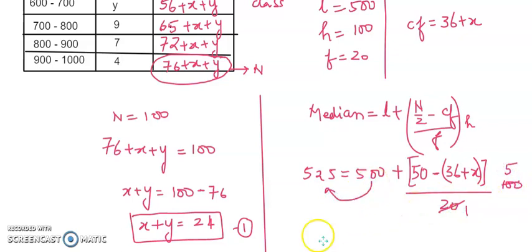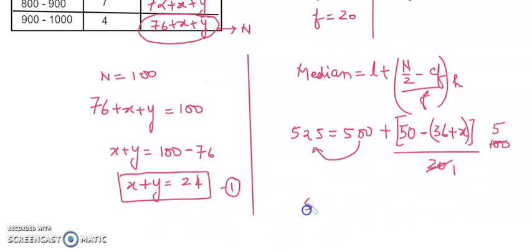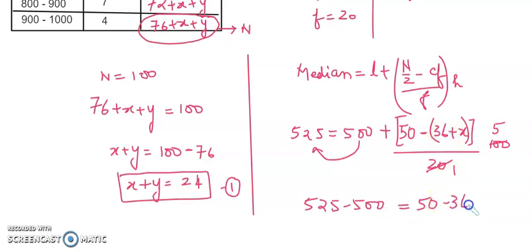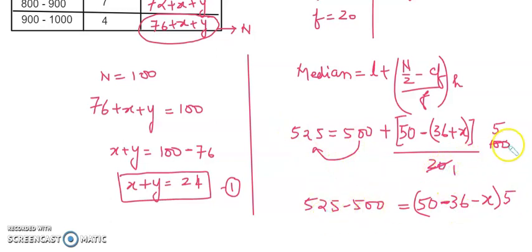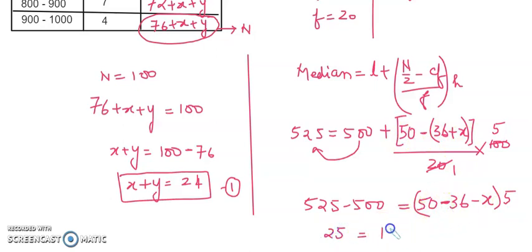Shifting 500 to the left: 525 minus 500 equals 50 minus 36 minus x, multiplied by 5. So 25 equals (50 minus 36 minus x) times 5, which gives 25 equals (14 minus x) times 5.